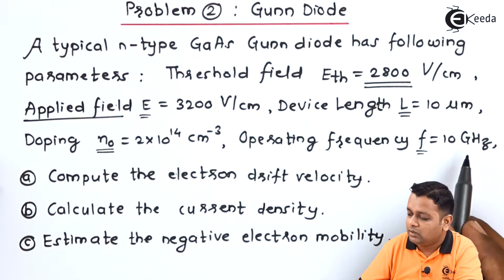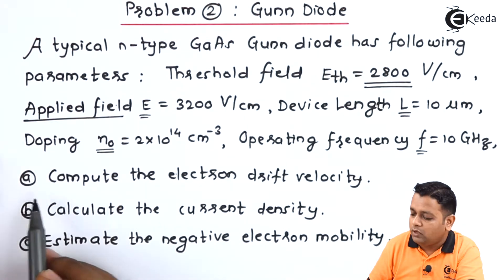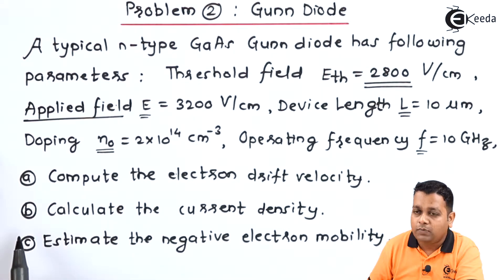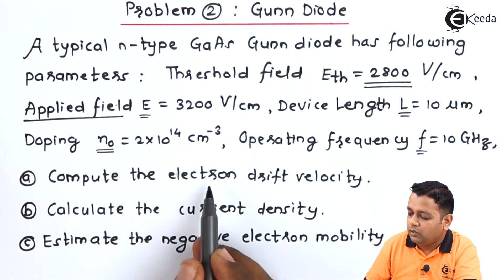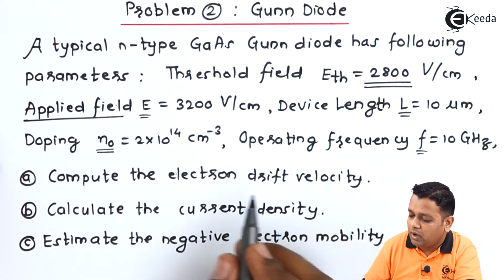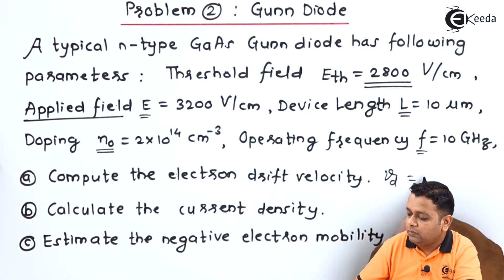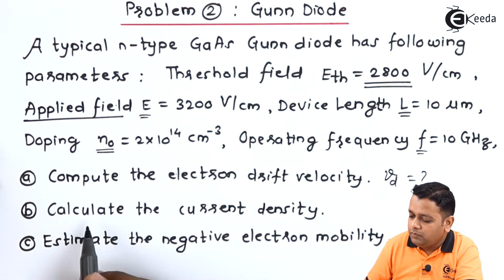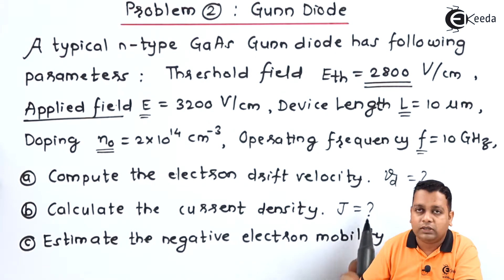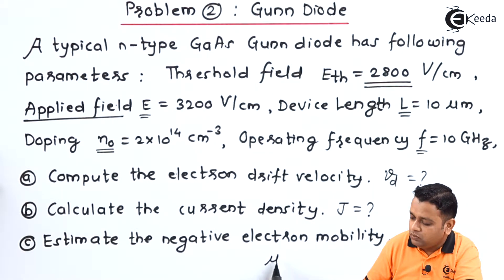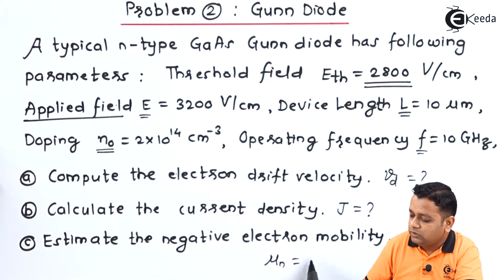The operating frequency f has a value of 10 gigahertz. We are required to compute: in part (a) the electron drift velocity v_d; in part (b) the current density J; and in part (c) the negative electron mobility μ_n.